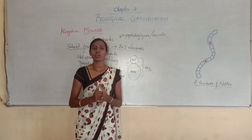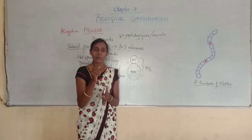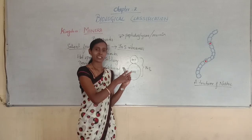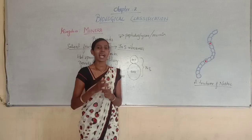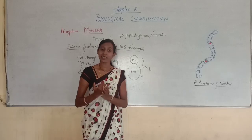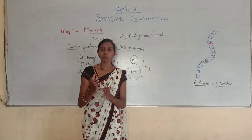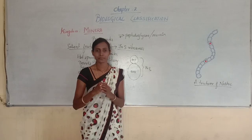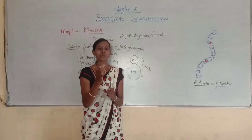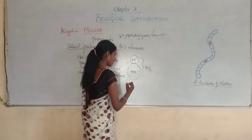Some organisms in Kingdom Monera have the ability to fix atmospheric nitrogen. The atmosphere comprises about 78% nitrogen, and plants require nitrogen in large quantities, but cannot utilize atmospheric nitrogen directly — so it must be converted through nitrogen fixation. An important example of a nitrogen-fixing organism is Rhizobium.